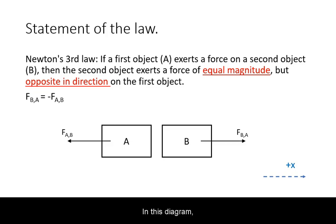In this diagram, we are representing the two objects as A and B. The forces are represented by arrows and labeled as the force exerted on the object by the other object.